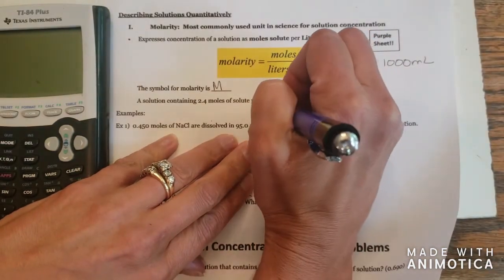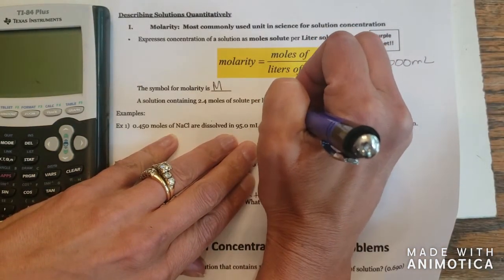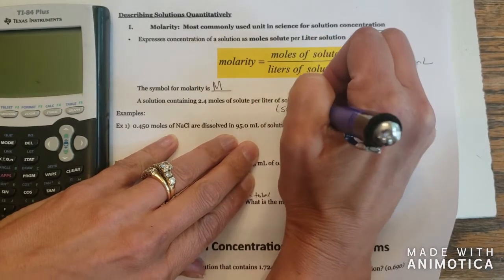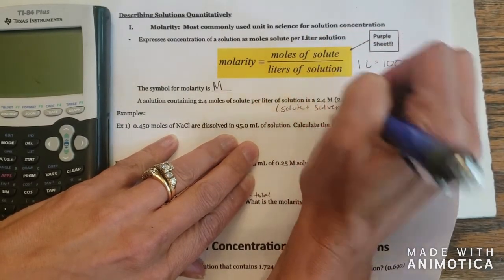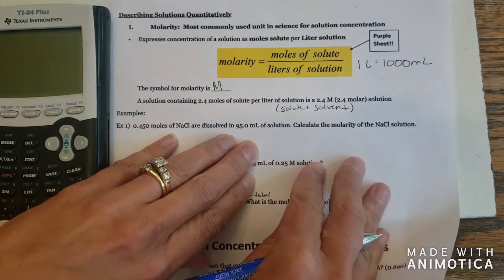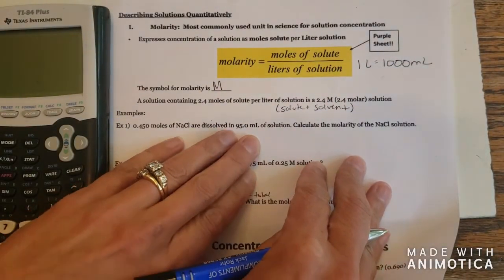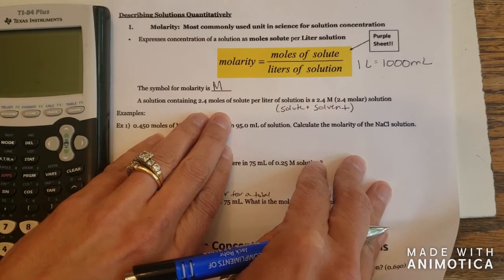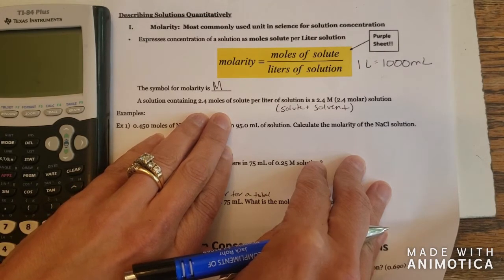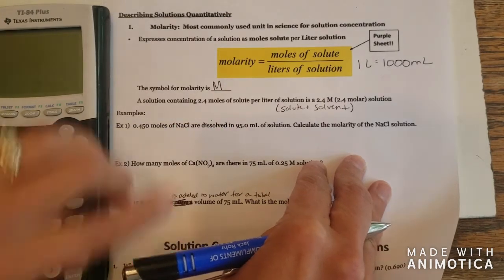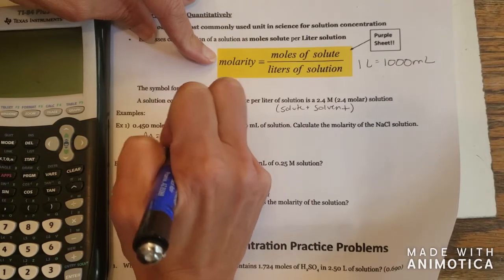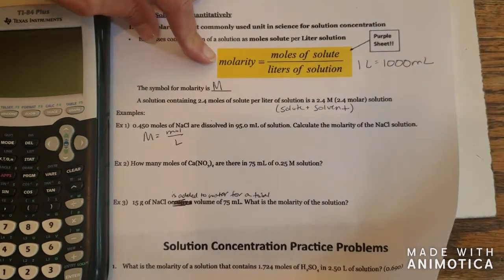Remember, solutions include the volume or the mass of the solute plus the solvent. And so it includes both of those things. So it's not 2.4 moles of solute per liter of water. It's 2.4 moles of solute per liter of solution. So this is the formula we're using. Molarity is equal to moles over liters.